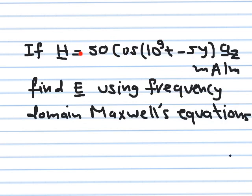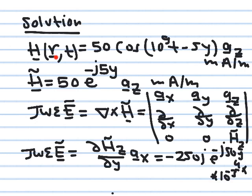To work in the frequency domain we first convert H to a phasor. The phasor contains the amplitude and phase information. The amplitude is 50 mA/m and the phase is e^(−j5y), since we remove the e^(jωt) time dependence. So the phasor H̃ = 50 e^(−j5y) az mA/m.